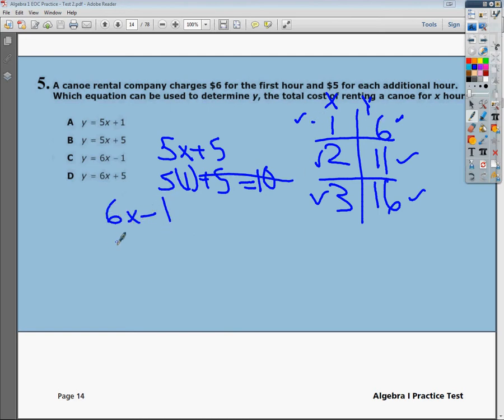6X minus 1, if I plug in 1 here, I'd do 6 times 1, which is 6, minus 1 is 5. But, when I plug in 1, I'm supposed to get 6, so it doesn't work. Same thing with the last one, you plug in 1 and get 11. And, obviously, that would be the same problem as before when we tried to set it up.